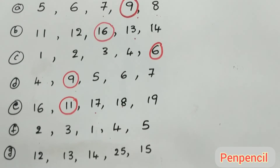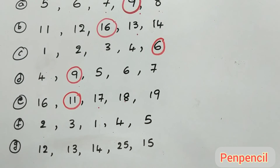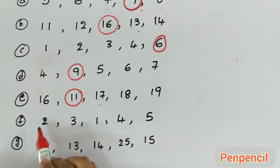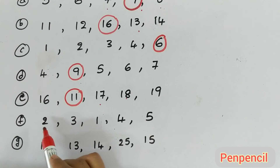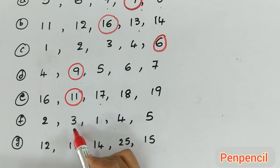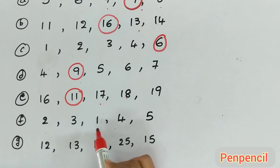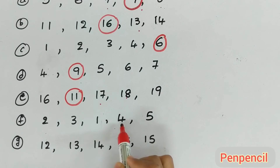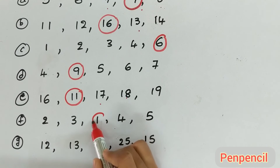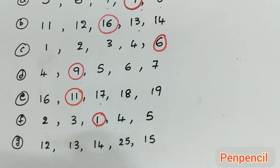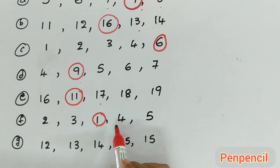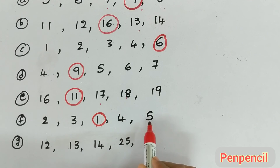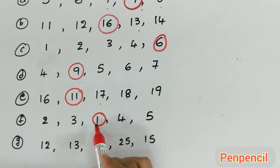Now come on, next one. 2 — what is the number after 2? 3. What is the number after 3? 4. So 1 is the wrong number. Then what is the number after 4? 5. Here 1 is the wrong number.